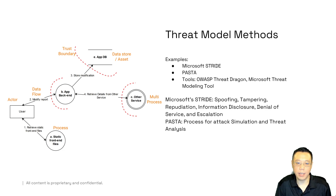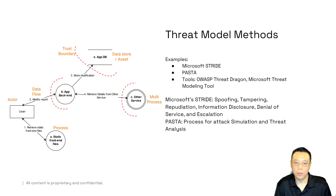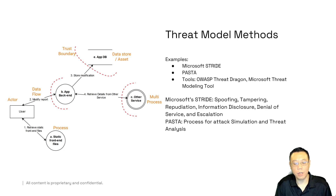Every entity, every data consumer, a process, trust boundaries — as you can see, it's a very similar pattern. Unidirectional versus bi-directional, trust boundaries, where the data asset sits, how it gets moved in motion. You can utilize tools and methods for this. Methodologies are based on what you need — Microsoft STRIDE is a very popular one.